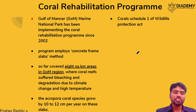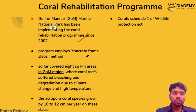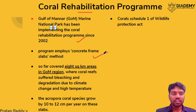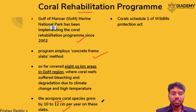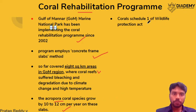The first topic is the Coral Rehabilitation Program. The Gulf of Mannar Marine National Park — please remember it is a National Park — has been implementing this program since 2002 to rehabilitate corals and reduce the impact of coral bleaching. They are using the concrete frame slabs method, a structure on which corals are grown. For example, the Acropora coral species grows at 10 to 12 cm per year on these slabs. Already 8 square kilometers of area has been covered. Please remember corals are listed in Schedule I of the Wildlife Protection Act, 1972.